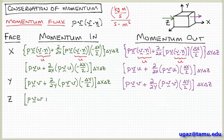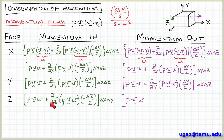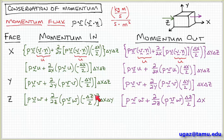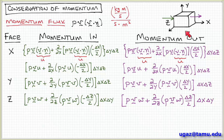The same thing applies for the front and back faces. On the back side I have rho v times the z component of velocity w, plus the partial with respect to z of rho v times w, times the distance from the center to the back face, minus delta z over 2, times the area of that face, delta x delta y. And then there is a corresponding expression for the front face of this cube.